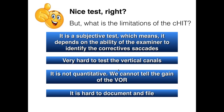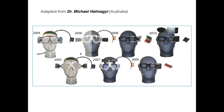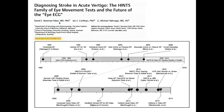The head impulse test has some limitations. First, it is a subjective test — it depends on the ability of the examiner to identify the corrective saccades, and sometimes it's not easy. If you're not familiar with the test or the patient has covert saccades it's not so easy to see them. Second, it's very hard to test the vertical canals. Third, it is not quantitative — I can tell that the labyrinth is not working properly because the VOR is deficient, but I have no way to measure how much it is not working. And it's hard to document in a file.